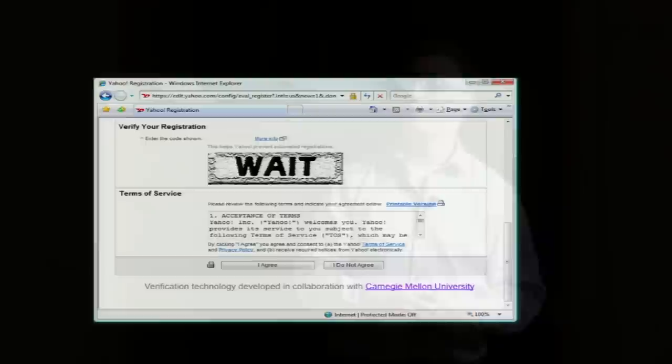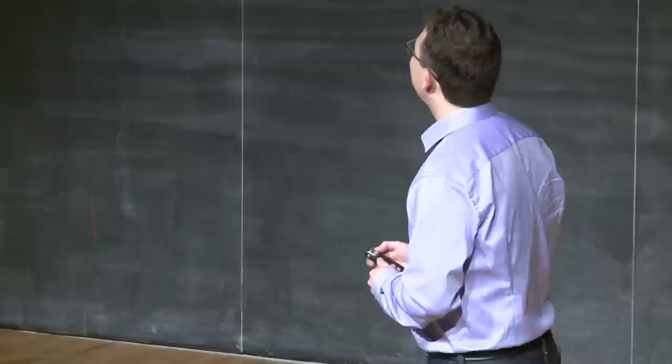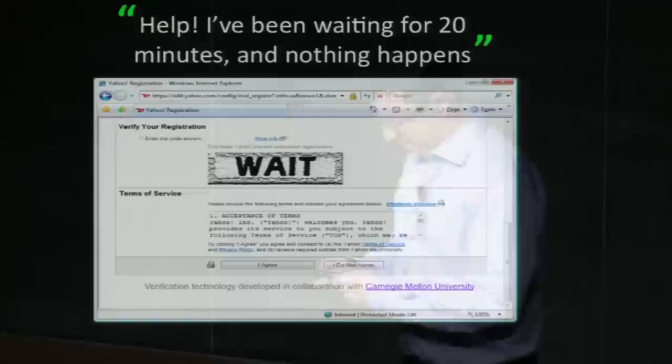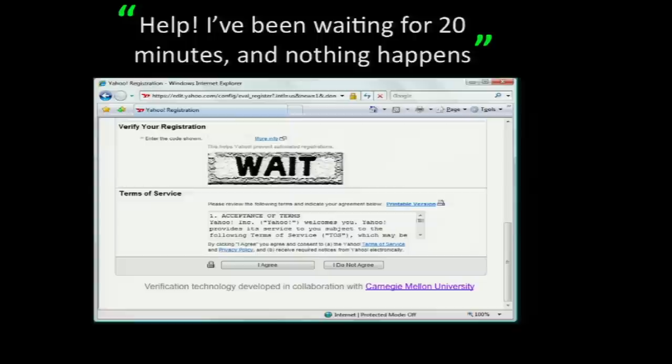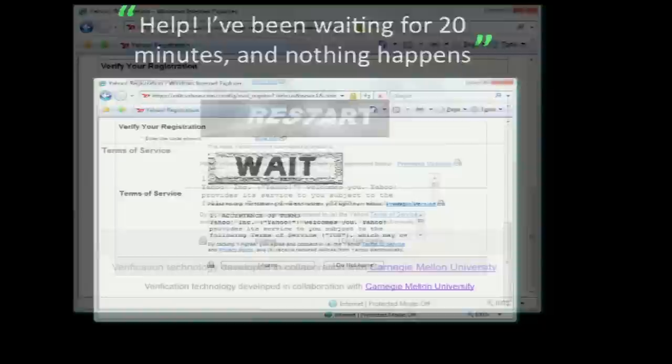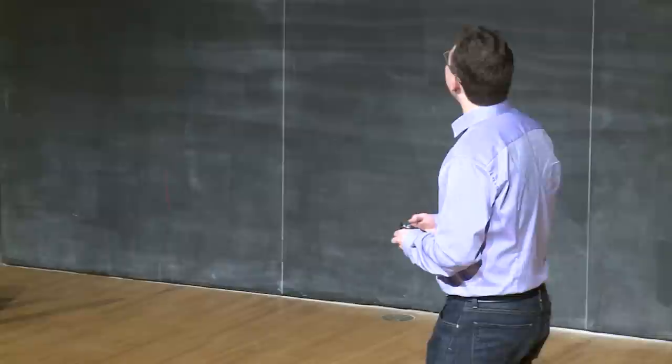So this is an example from the Yahoo registration page. The random characters that happened to be shown to the user were W-A-I-T, which of course spell a word. But the best part is the message that the Yahoo helpdesk got about 20 minutes later. This person thought they needed to wait. This, of course, is not as bad as this poor person.